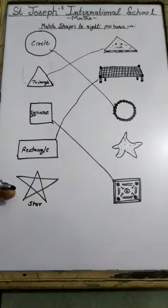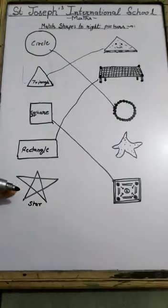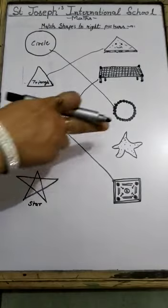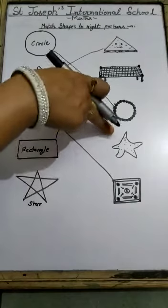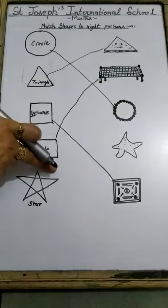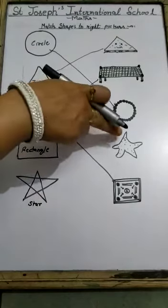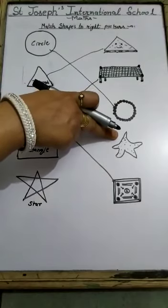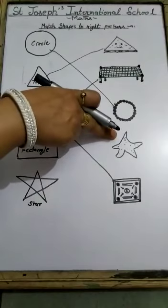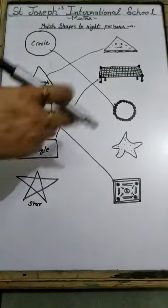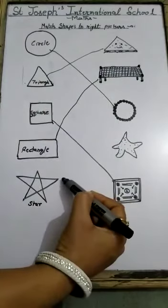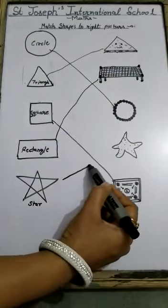And the last — star. This is star shape. And we have only one shape, one picture left. So match to the star. This is star shape — starfish. This is starfish and starfish has star shape. So match star shape to the starfish.